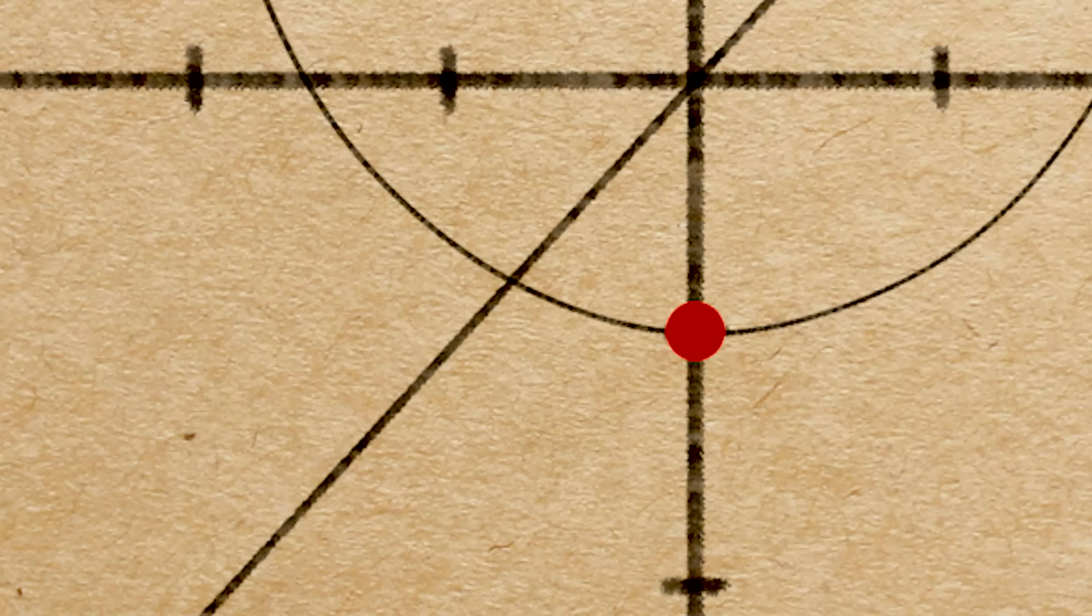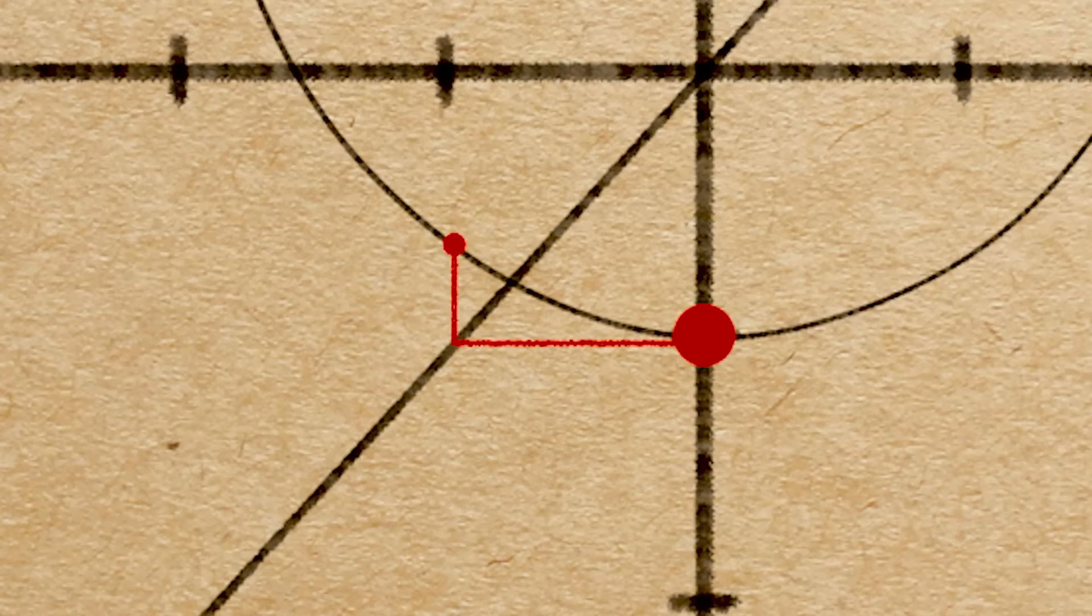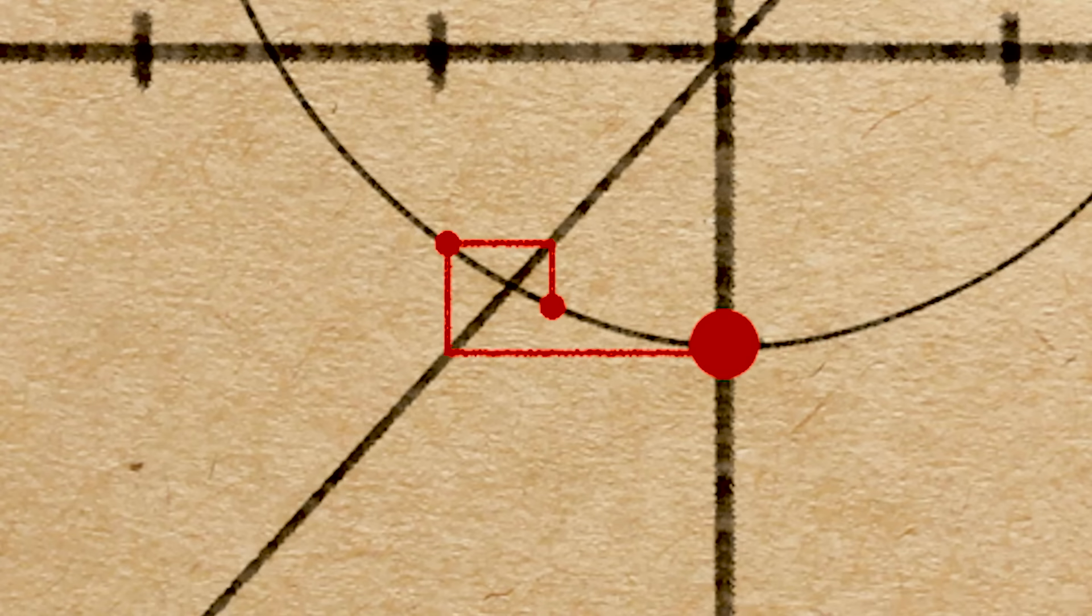So here's how we can visualize iterating zero under this process. We're going to start at zero, and we'll go down until we hit our graph. And then we're going to turn left or right until we hit the line. Here's my line. And then we're going to go up or down until we hit the graph. Here's my graph. And then we're going to repeat the process. So left or right till I hit the line, up or down till I hit the graph.